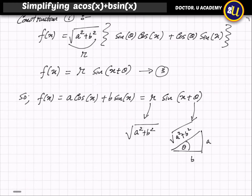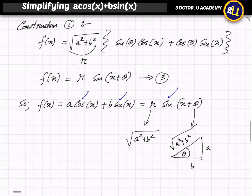Now we have to understand why this is important. Originally you have cos(x) and sin(x) — two circular functions. Ultimately you have reduced that into one circular function. That is the most important result of this construction: two circular functions reduced into one.